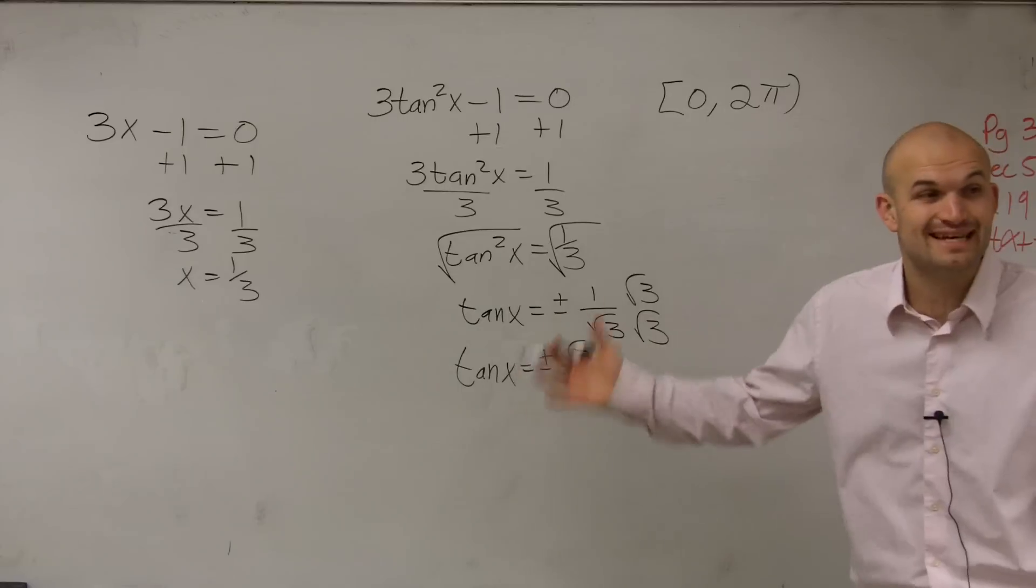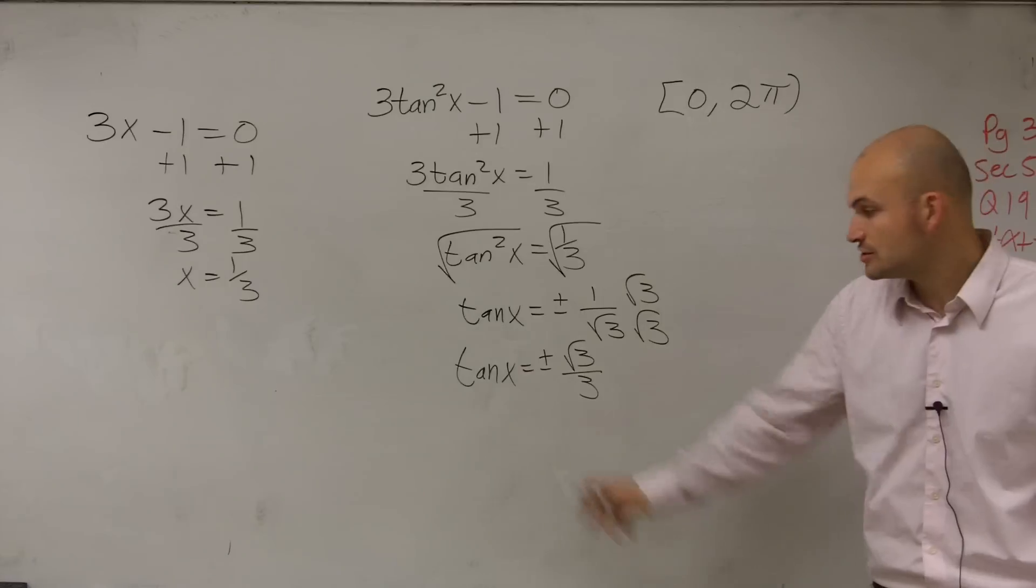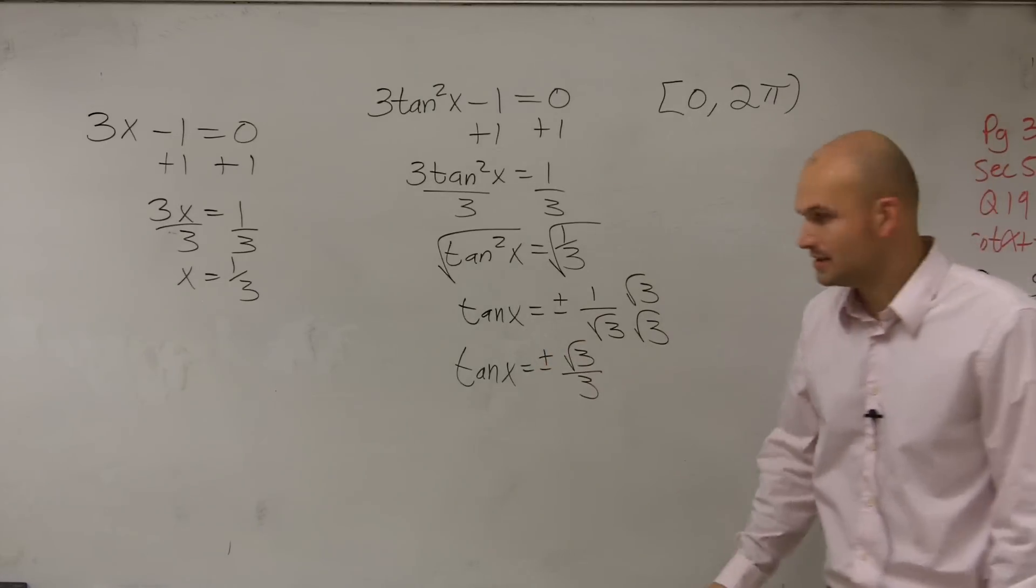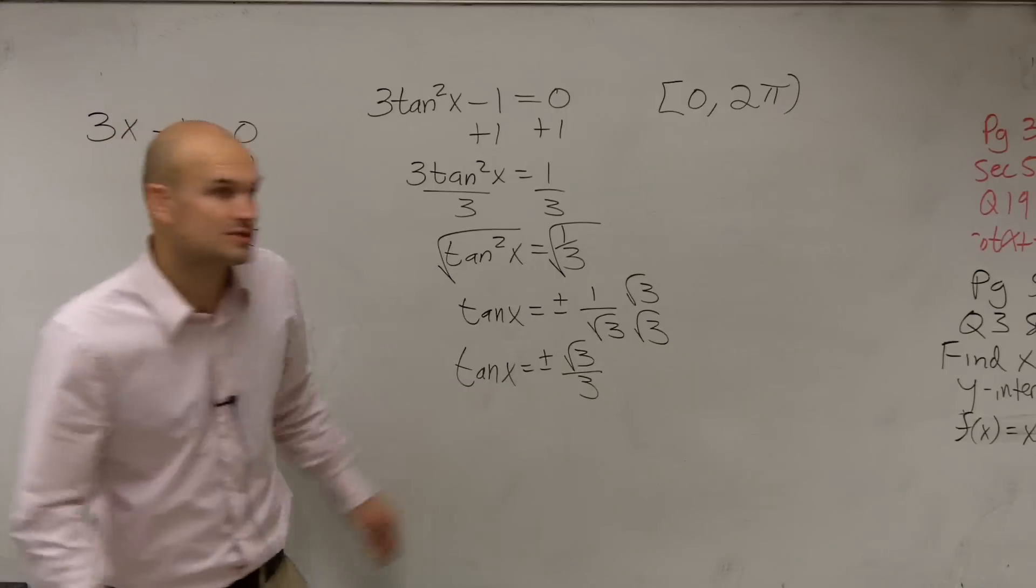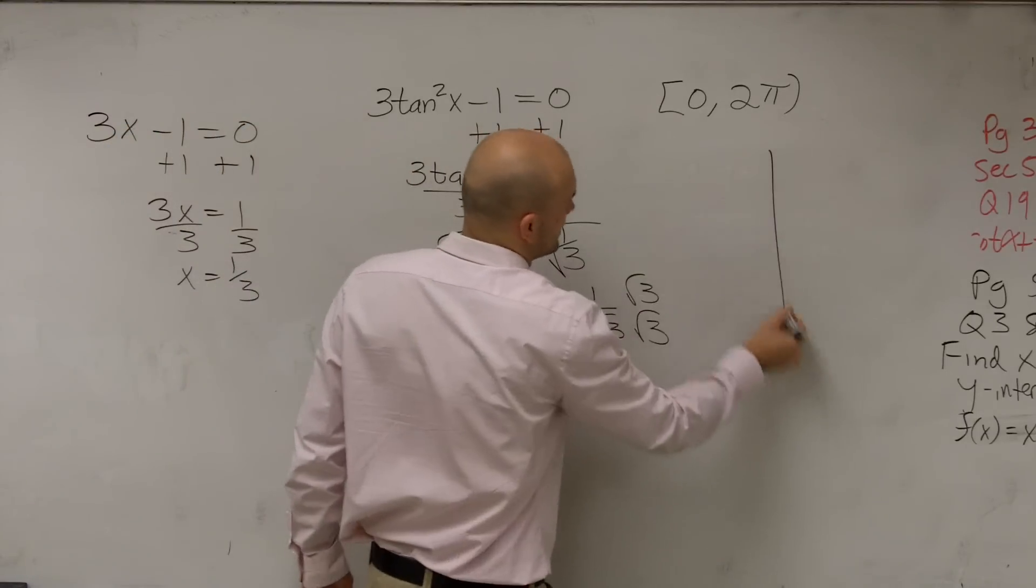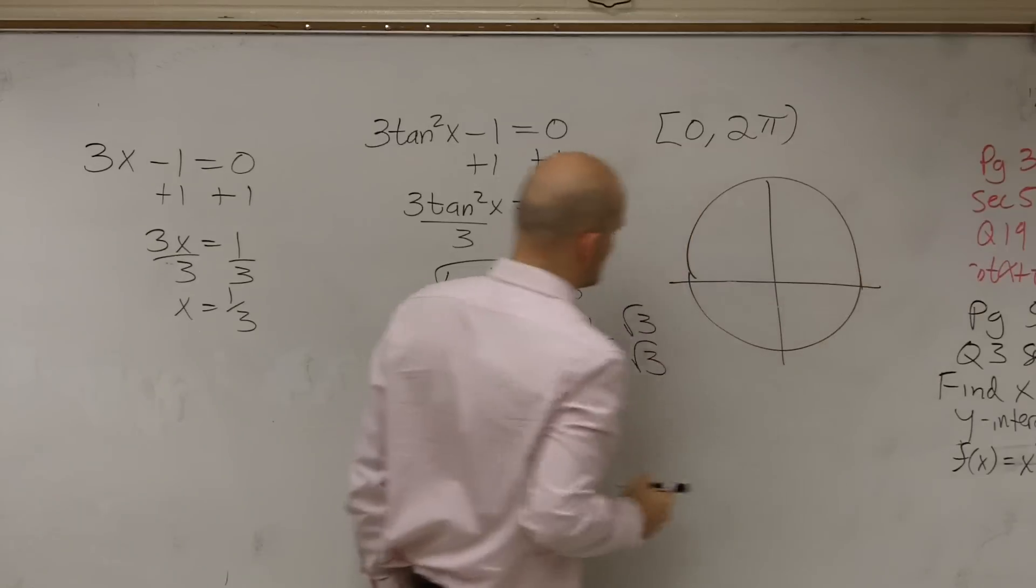We just have the value of when we take the tangent of the value, we get plus or minus square root of 3 over 3. So we don't have the value of x yet. So to find the value of x, we are going to apply going back to our unit circle. Going back to the lovely days of making sure we can construct the unit circle and understanding it.